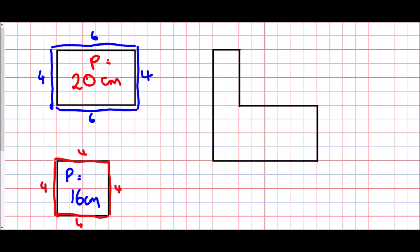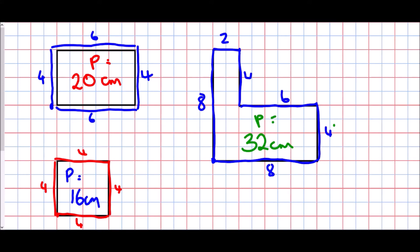For the L-shape, I'll begin at this point and walk all the way around, taking into account every single line I'm traveling along. Going up the side I've got eight squares, then along two, then down four, across eight — and there are two more sides. Adding them all together: eight plus two is ten, plus four is fourteen, plus six is twenty, plus four is twenty-four, plus eight is thirty-two. The perimeter of that shape is thirty-two centimeters.